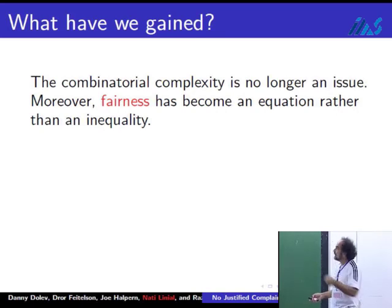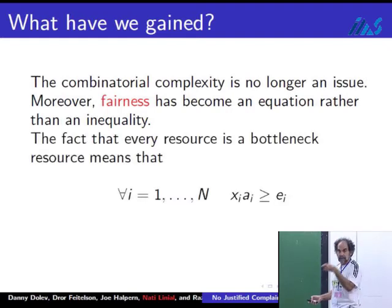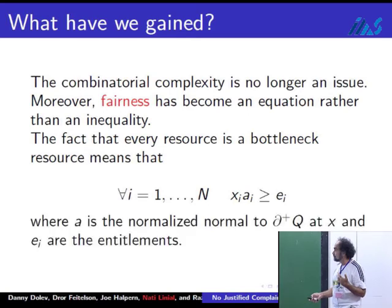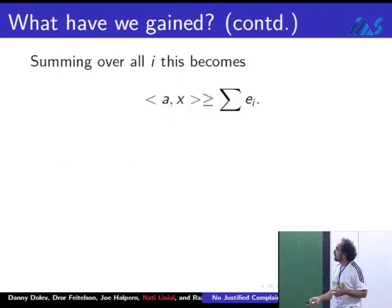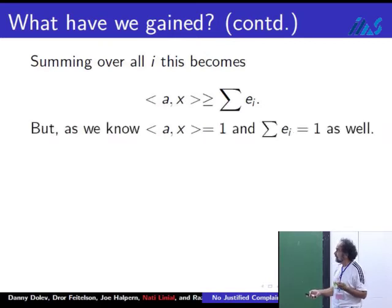Even if I ran a little fast over this, let me wrap up what happens here. That's a requirement of a bottleneck: x_i times a_i is at least e_i. That replaces x_i times r_ij is at least e_i, where the A vector is a normal to the upper boundary of Q. This means we have to satisfy this inequality, but I know that this is one and this is one. This means that in this system of inequalities, all of them must hold with equality.